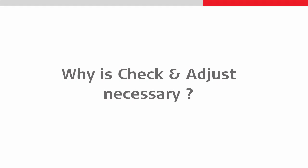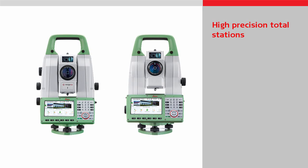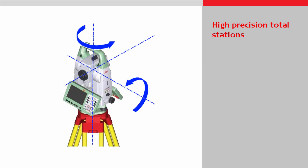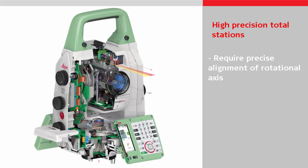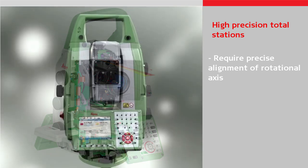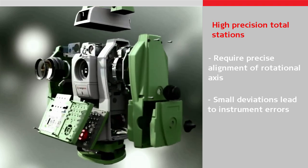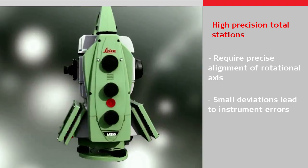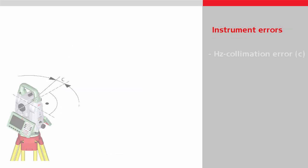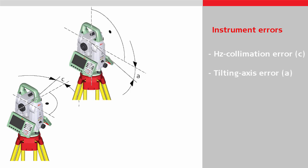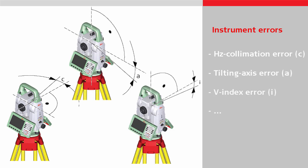The check and adjust feature is a tool to perform a user calibration of the instrument. To measure with high precision, total stations have to fulfil specific requirements of the rotational axis, in particular regarding the alignment of those axes. Meeting these requirements is a tough task during manufacturing. Even the most careful and precise assembly process will result in small deviations which can lead to so-called instrument errors, like the horizontal collimation error, tilting axis error, or vertical index error, which can affect the measurements and therefore lead to wrong results if they are not properly considered.